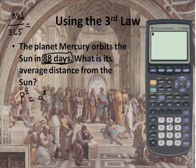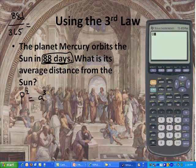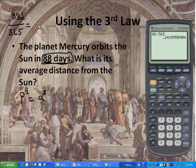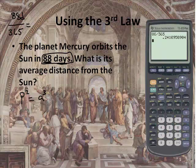I'm going to take my calculator, take 88, and divide it by 365. This is the period of Mercury with respect to the Earth. It's 0.241, so that's P — 0.241 squared.